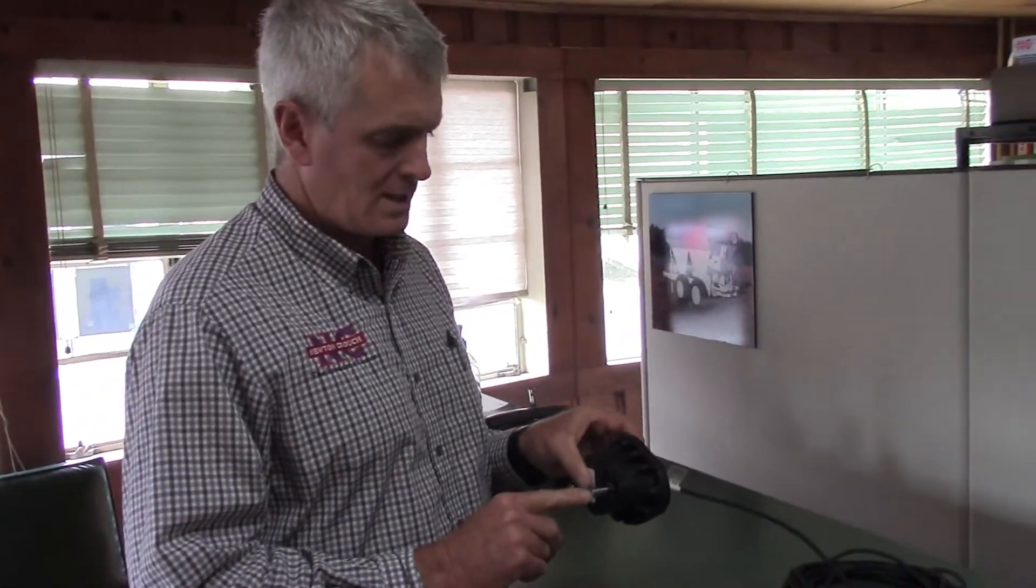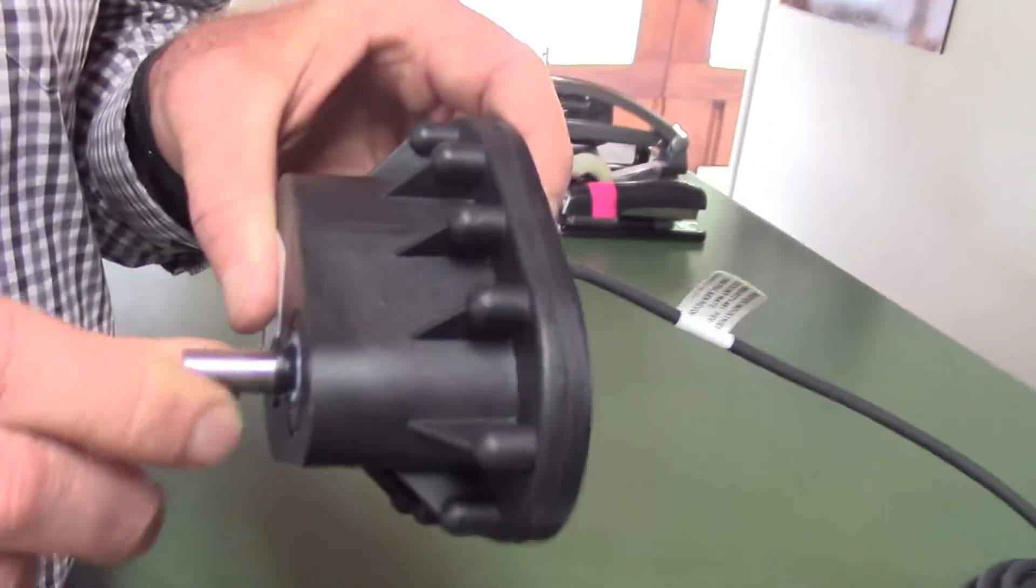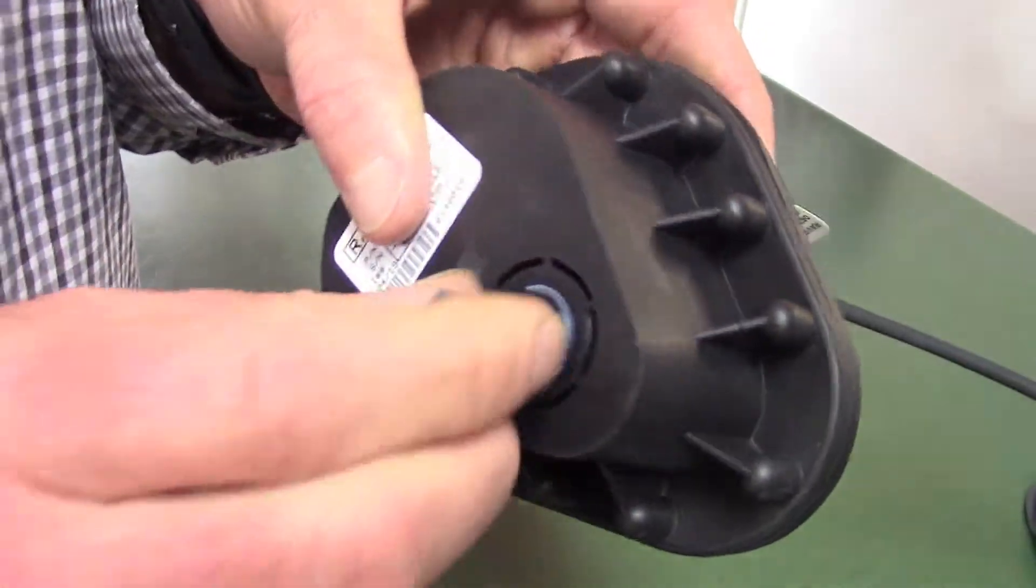Sometimes people call us and say something happened, I don't have a rate. What we tell them is this is the part that we would start troubleshooting first, the encoder. This shaft turning is not sending a signal back to the rate controller.